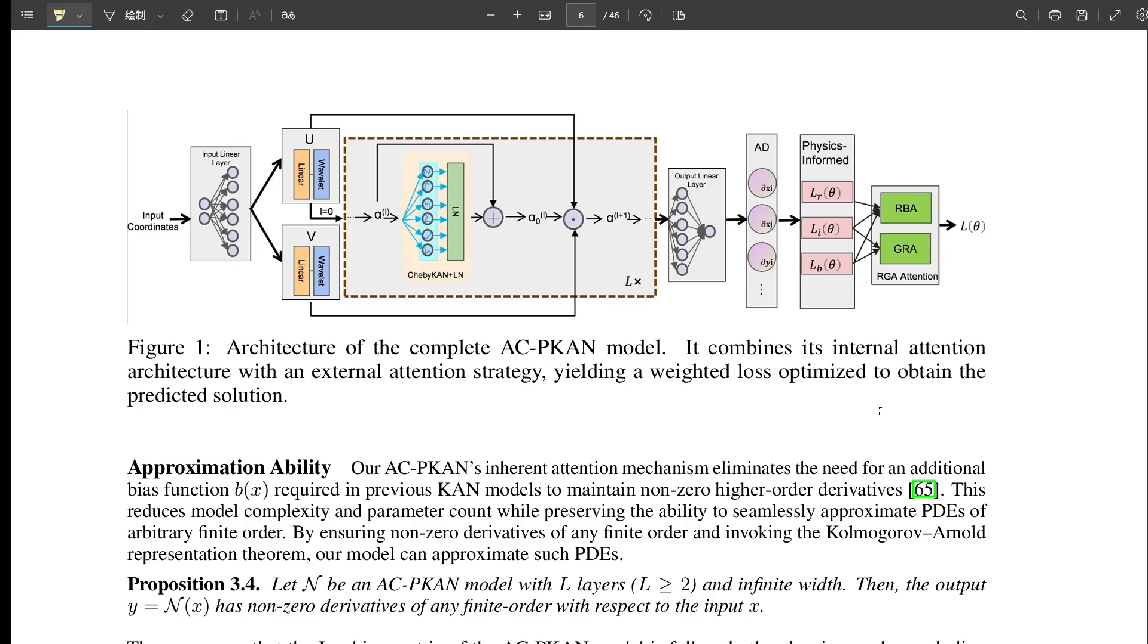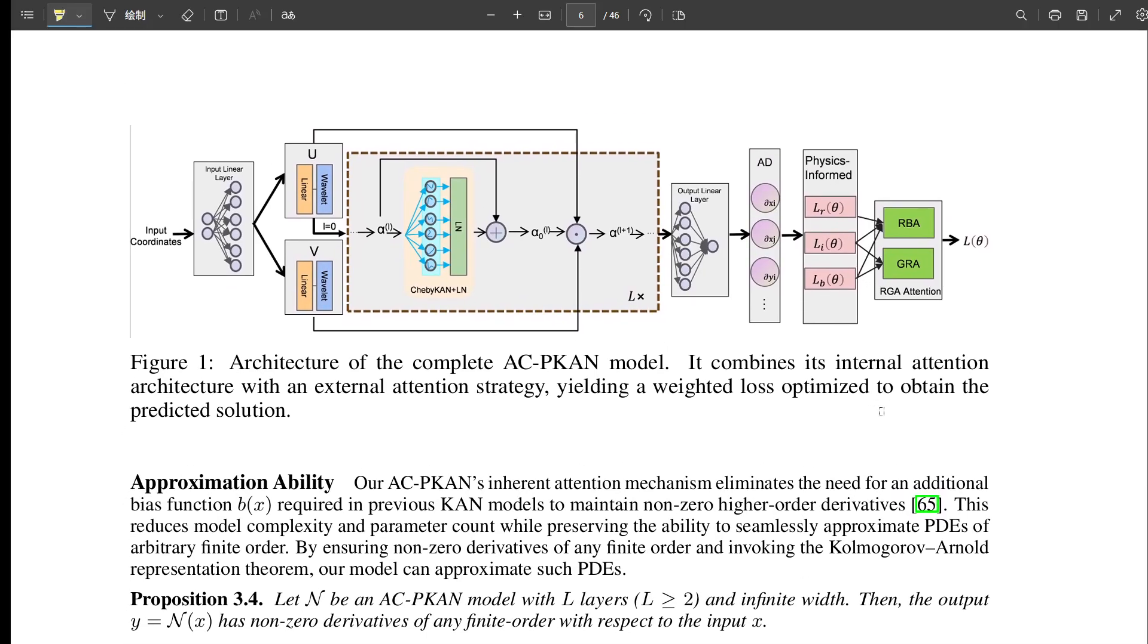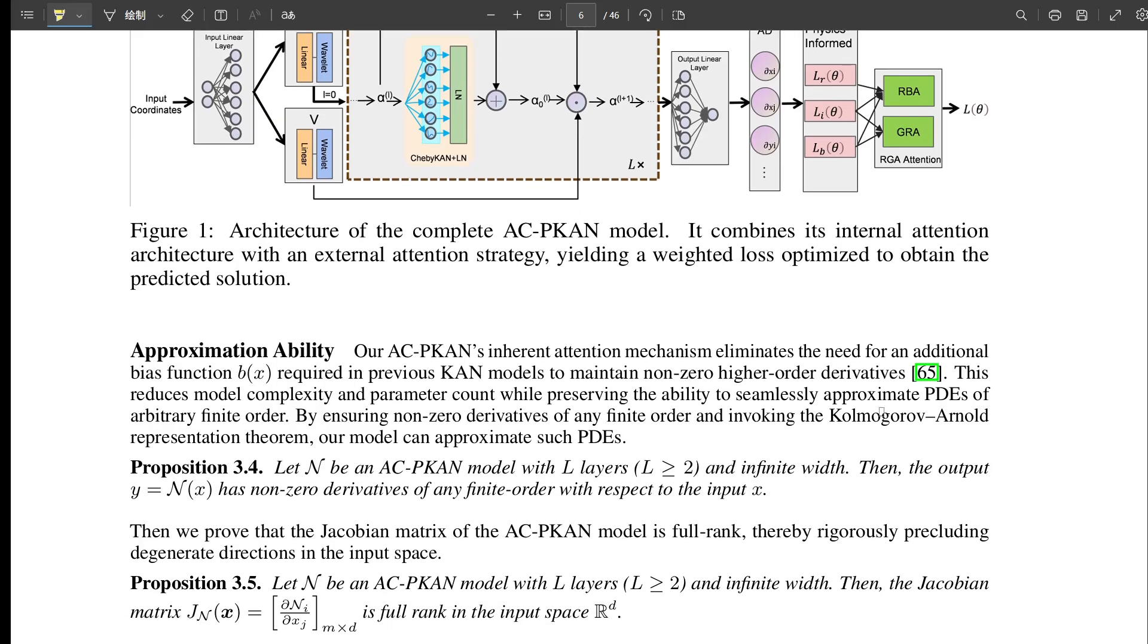Interestingly, the paper notes that many of the other models often got stuck in local minima during training. Figure 5 in the appendix tries to visualize the loss landscape for the 1D wave equation. For ACPKAN, it looks noticeably smoother compared to Chebyshev-1-CAN, F-CAN, and others. A smoother landscape generally means the optimizer has an easier path to finding a good solution, suggesting better training stability for ACPKAN.